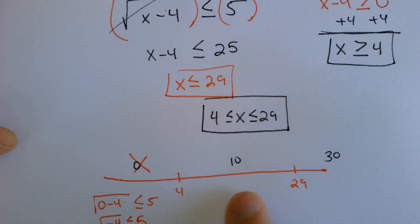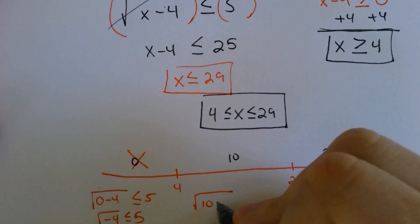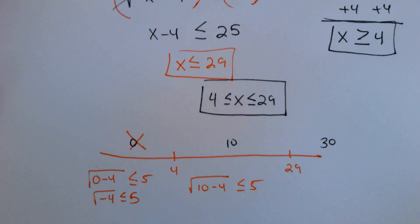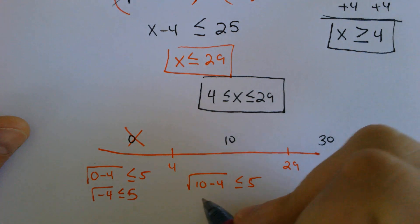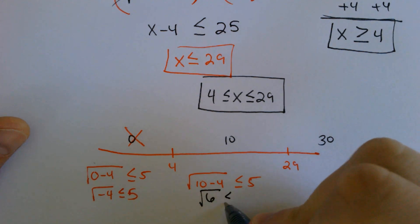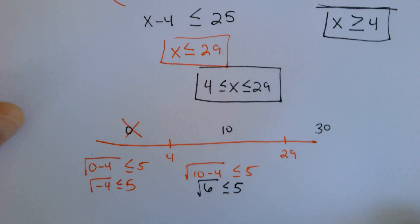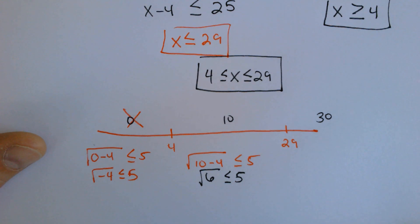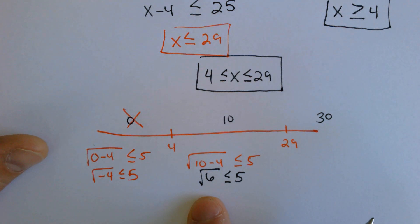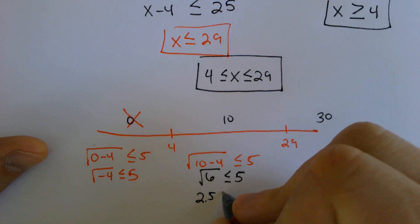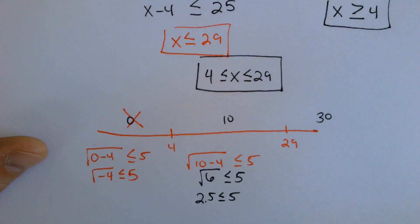Plugging in 10: the square root of 10 minus 4, is that less than or equal to 5? Well, 10 minus 4 is 6. The square root of 6 — you could use a calculator — but it's somewhere in between 2 and 3, because the square root of 4 is 2 and the square root of 9 is 3. So this is about 2.5. Well, 2.5 is less than 5. So that does work.